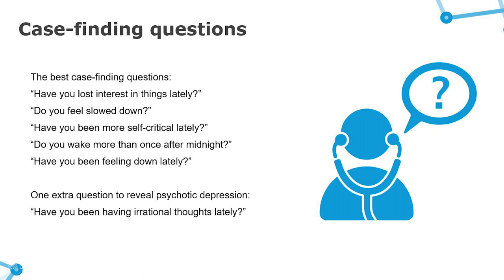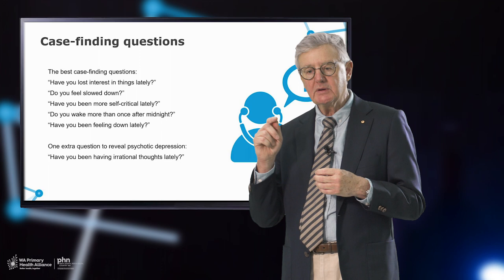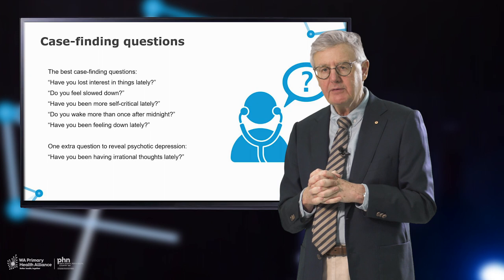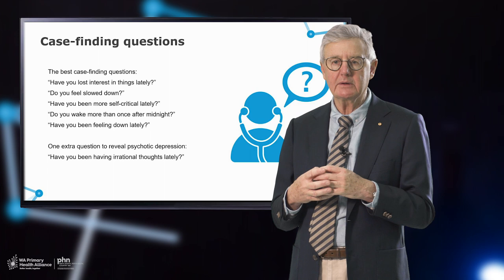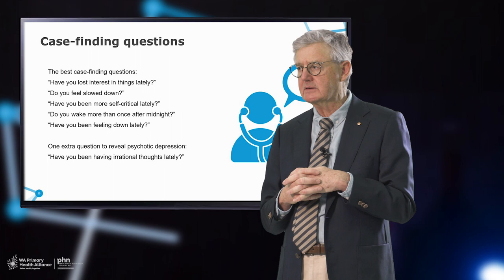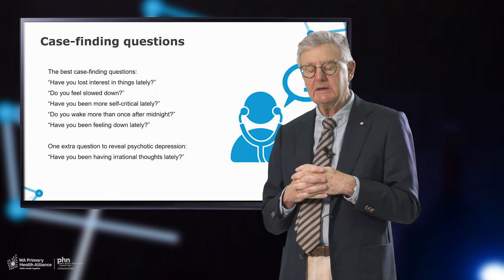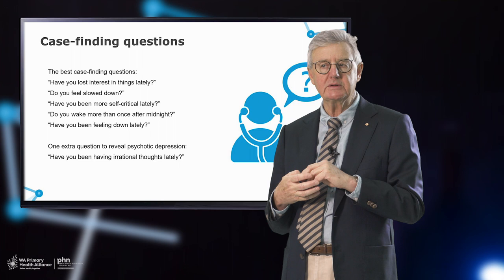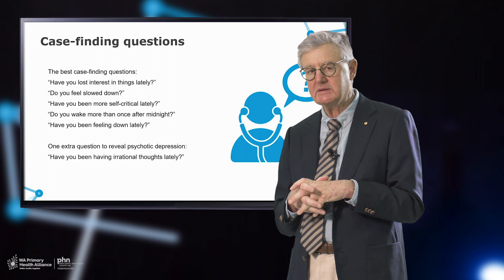Case-finding questions in depression are useful, but don't start by alerting the patient to your suspicion of depression early on — particularly with males, as it may shut them down. Perhaps the best approach is to ask questions sampling the neurovegetative syndrome. 'Have you lost interest in things lately?' is a good place to start — the anhedonia question — and often picks up immediately, particularly if a family member is in the room. 'Have you felt slowed down?' — the motor retardation question — will very likely produce a positive response.